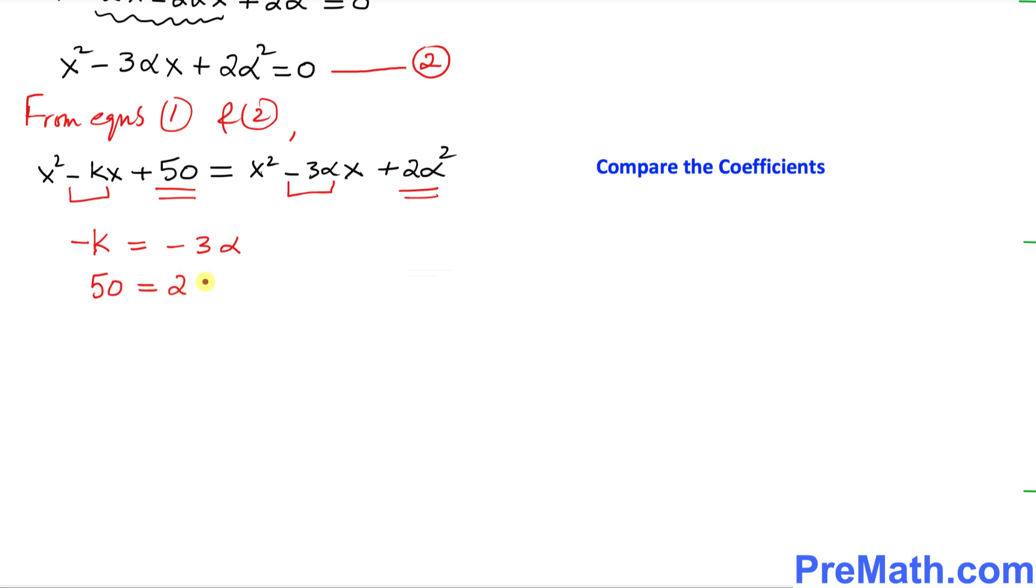On the first equation, if you remove their negative signs, k turns out to be 3 alpha. On the second equation, if you divide both sides by 2, this gives us alpha squared equals to 25. I can take the square root on both sides, so alpha turns out to be positive or negative 5. That means alpha has two values: positive 5 and negative 5.